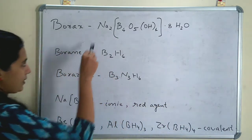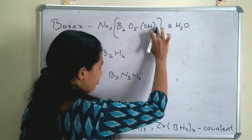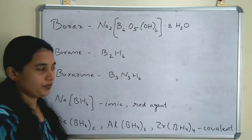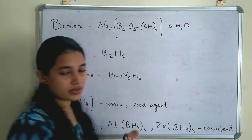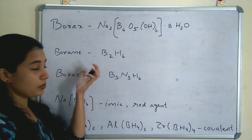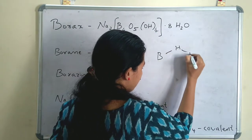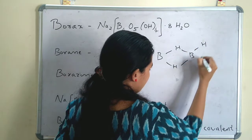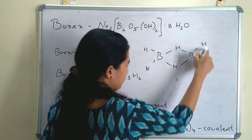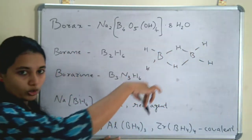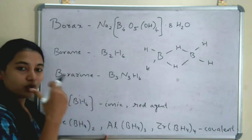Another boron compound is borax, with formula Na2B4O5(OH)4·8H2O. Borax is used as a primary standard in titration against acids. Another important compound is B2H6, diborane. The structure of B2H6 has two boron atoms bridged by two hydrogen atoms, with two terminal hydrogen atoms on each boron. This bridging bond is called a banana bond or a 3-centre 2-electron bond. Diborane is important and will be discussed in detail in another video.